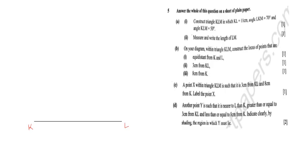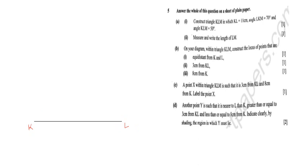We'll name this side K and this side L. We are told that angle LKM — from L to K, with M somewhere above — is 70 degrees, and we have to indicate that. I'll need a protractor for that.